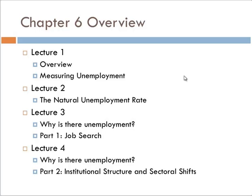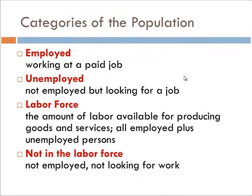In Lecture 2, we're going to talk about the natural rate of unemployment and a model for determining this. Lecture 2 is going to be really important because it's going to be the first time you may have ever seen a dynamic macroeconomic model — that is, a model that has an evolution over time, and feeds back on itself over time. In Lecture 3, we're going to start talking about why there is unemployment in the first place, specifically the job search. In Lecture 4, we will continue to answer this question by looking at unemployment caused by the actual structure of the economy and changes in the structure — what's called sectoral shifts. The first thing we're going to do is break the population down into some categories.